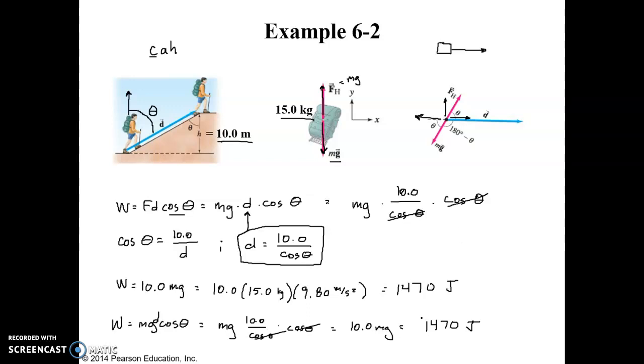So it is negative. It's negative work. And so if we combine these two, 1470 that he does on his backpack, and the negative work of 1470 done by gravity, the net work that is done here is zero. So there is zero net work done on the backpack.